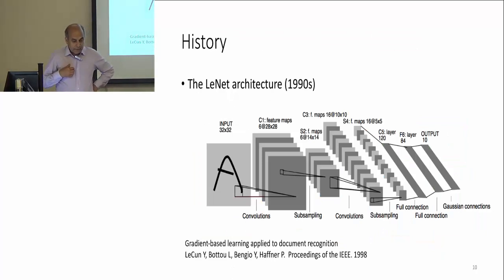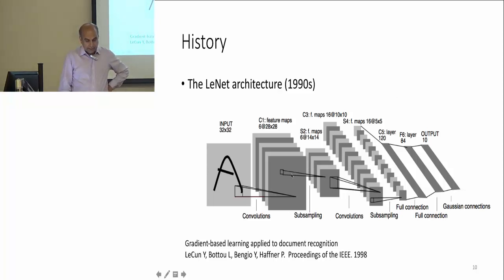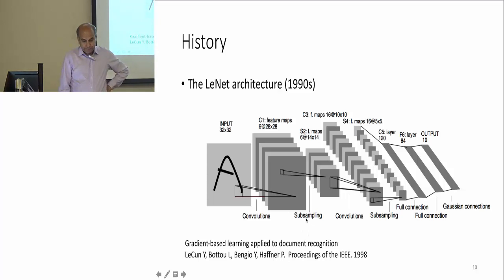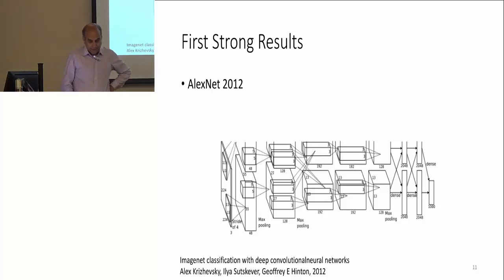Neural networks are not new — we've been talking about them for a long time. In the 90s there was a neural network called LeNet, which was able to recognize characters. It also had convolutional layers, subsampling, and fully connected layers, similar to modern CNNs.